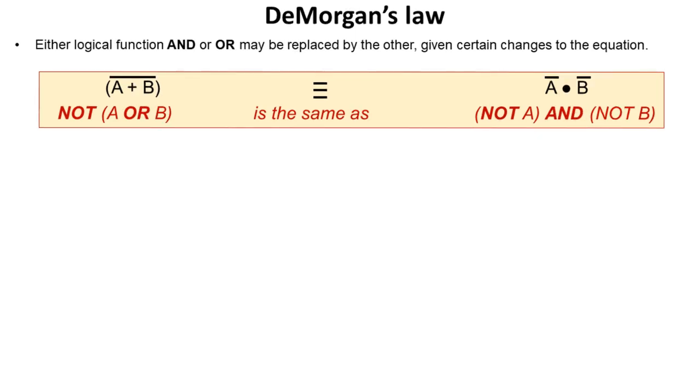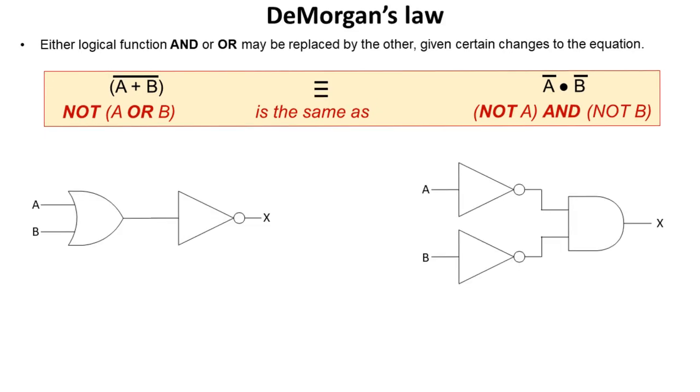We could also look at it the other way round. So we could this time say NOT (A or B) is exactly the same as equivalent as (NOT A) and (NOT B). Which is the same as saying that this circuit diagram is exactly the same as this circuit diagram.